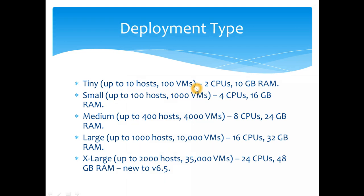You also need to consider how much CPU and memory the vCenter itself will consume. A tiny instance requires 2 vCPUs and 10 GB of memory — quite a lot. In a home lab on a single ESX host with 32 GB RAM, that's 10 GB gone just for vCenter. If you're in a production environment and won't exceed 100 VMs, go for small; if you'll exceed that, go for at least medium, which supports up to 400 hosts and 4,000 VMs.